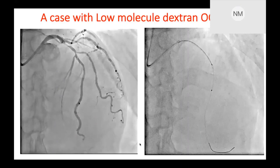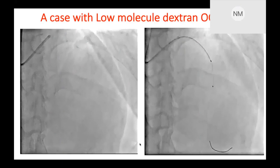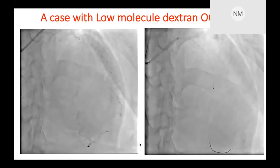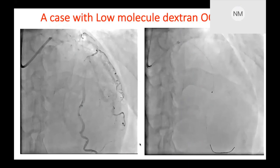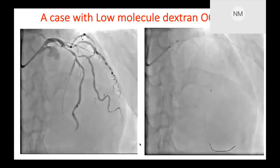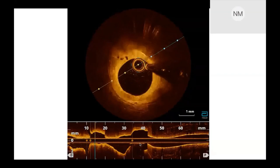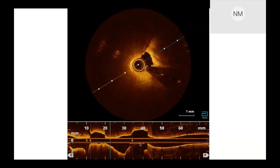This is another potential approach to simplify OCT-navigated PCI. Just two days ago, my junior colleague performed OCT-navigated PCI with low molecular dextran. As you can see, the OCT pullback was performed under low molecular dextran, and even with low molecular dextran, we can see a very beautiful view and evaluate lesion characteristics very sufficiently.